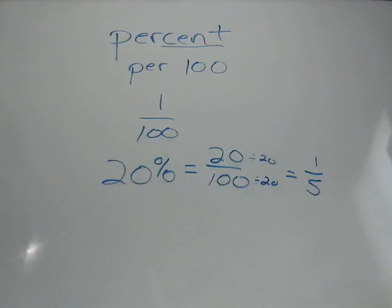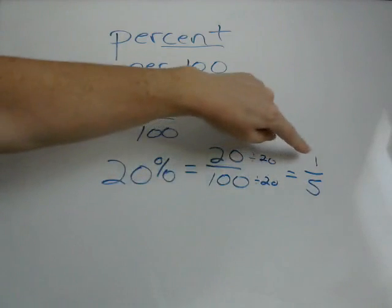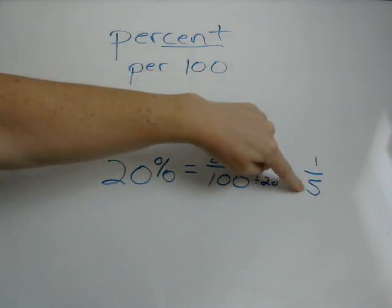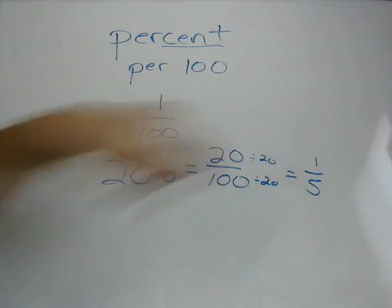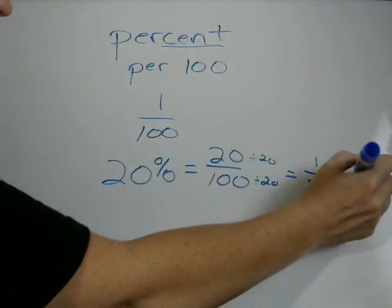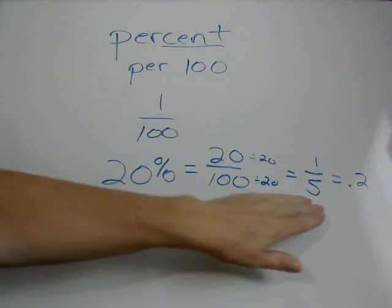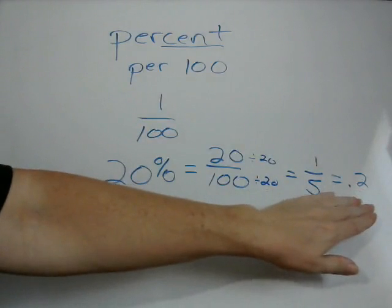Well, how do we write one-fifth as a decimal? Remember, with any fraction, you just read it numerator to denominator. So numerator divided by denominator, one divided by five. You plug that in your calculator, and you get .2. So 20% is the same as one-fifth, which is the same as .2.